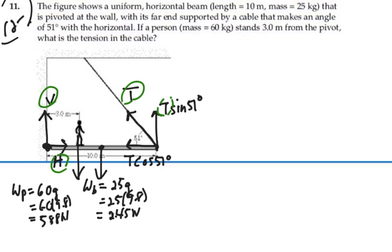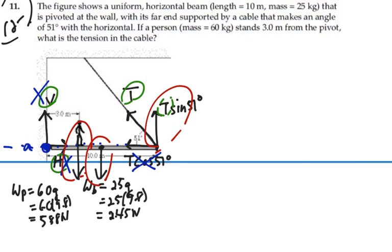I want to choose a point so I can eliminate most of my unknowns. If I choose the pivot as my point of rotation, call that point A, I will eliminate the vertical component because its line of action goes through that point, so it has no moment arm. I would also eliminate H and T cosine 51 degrees for the same reason. So I only have to consider the torques due to the person, the weight of the beam, and T sine 51 degrees.